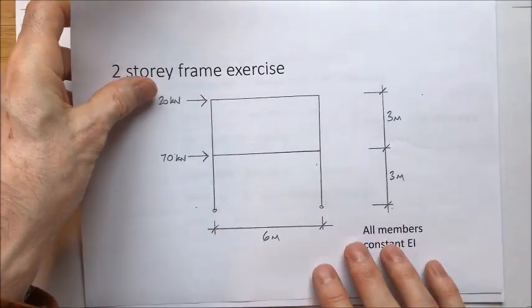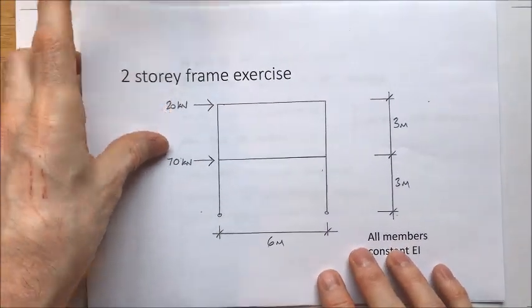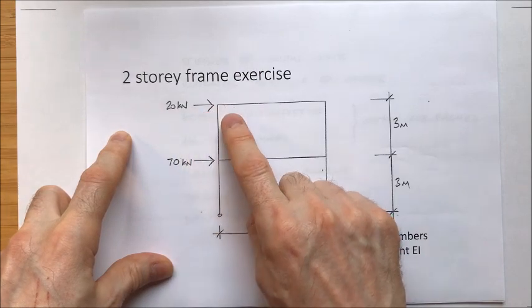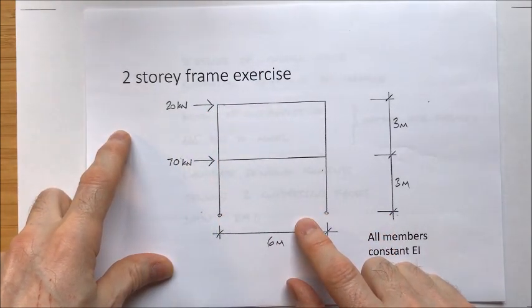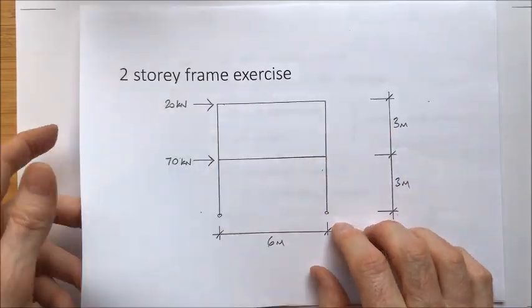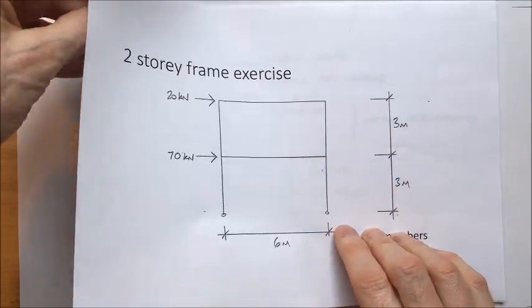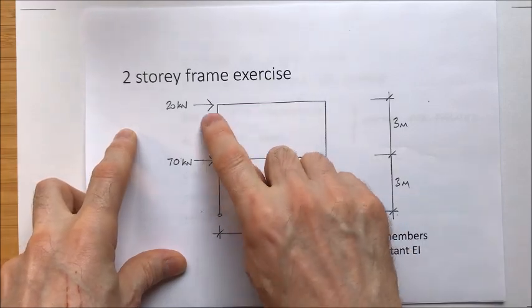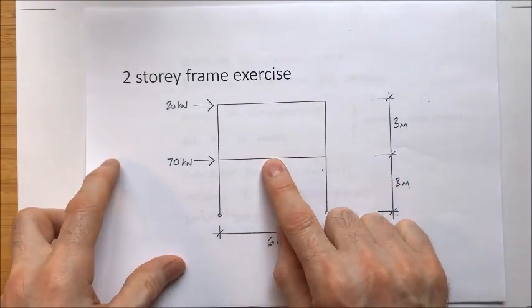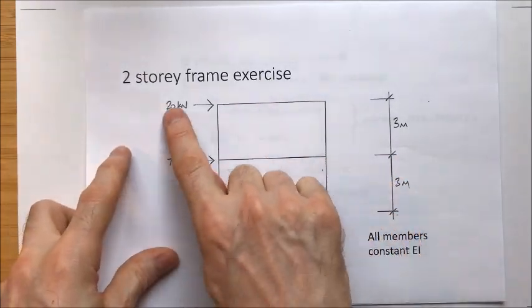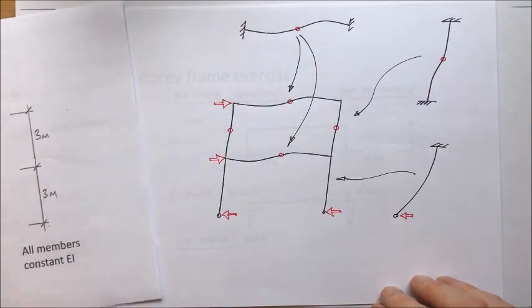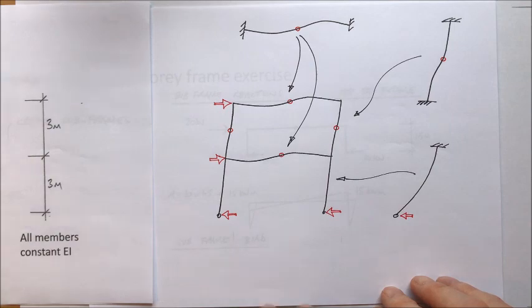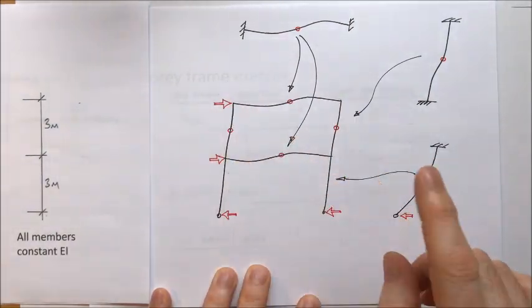One of the hardest things I find in life is to draw a deflected shape of a structure. Anything other than a simple beam or a cantilever is pretty difficult. However, I've had to have a go at this so that we can try to consider where the points of contraflexure may occur in our model. Here's the simplified frame with no deflection and here's the frame where I've attempted to draw the deflected shape.